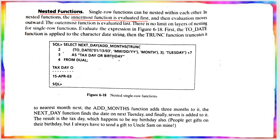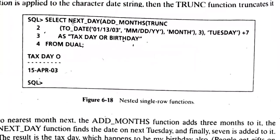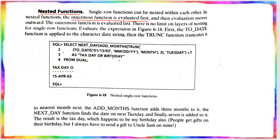For example, the TO_DATE function is applied to a character date string; then the TRUNC function truncates to the nearest month; and then the ADD_MONTHS function adds three months. Various functions — NEXT_DAY, ADD_MONTHS, TRUNC, TO_DATE — can all be nested together, which is an example of nested single row functions.